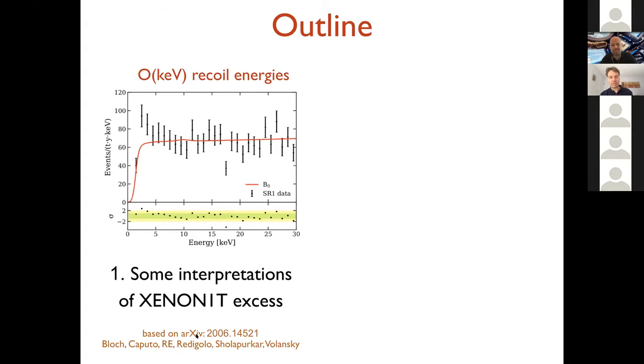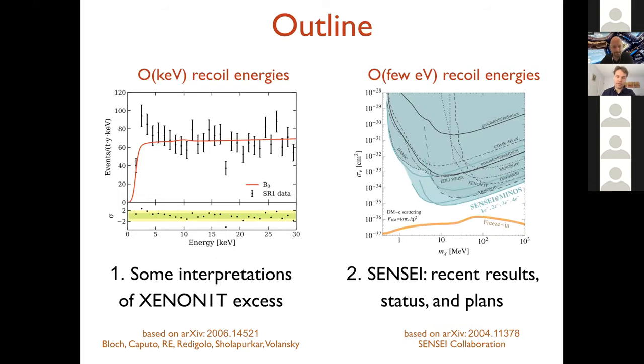And then there's a green region where we can access in the near term over the next few years, down to 500 kV and much lower cross-sections with new experiments. We can probe important milestones, various models. Here's a freezing line, for example. On the right side, I'm showing bosonic dark matter absorption. The idea is that a boson can be absorbed, bosonic dark matter can be absorbed by an electron.